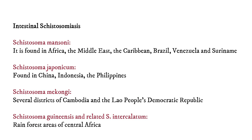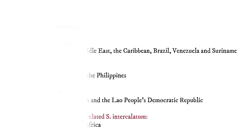Schistosoma japonicum is found in China, Indonesia, and the Philippines. Schistosoma mekongi is found in several districts of Cambodia and the Lao People's Democratic Republic. Lastly, Schistosoma guianicis and related S. intercalatum can be found in rainforest areas of Central Africa.